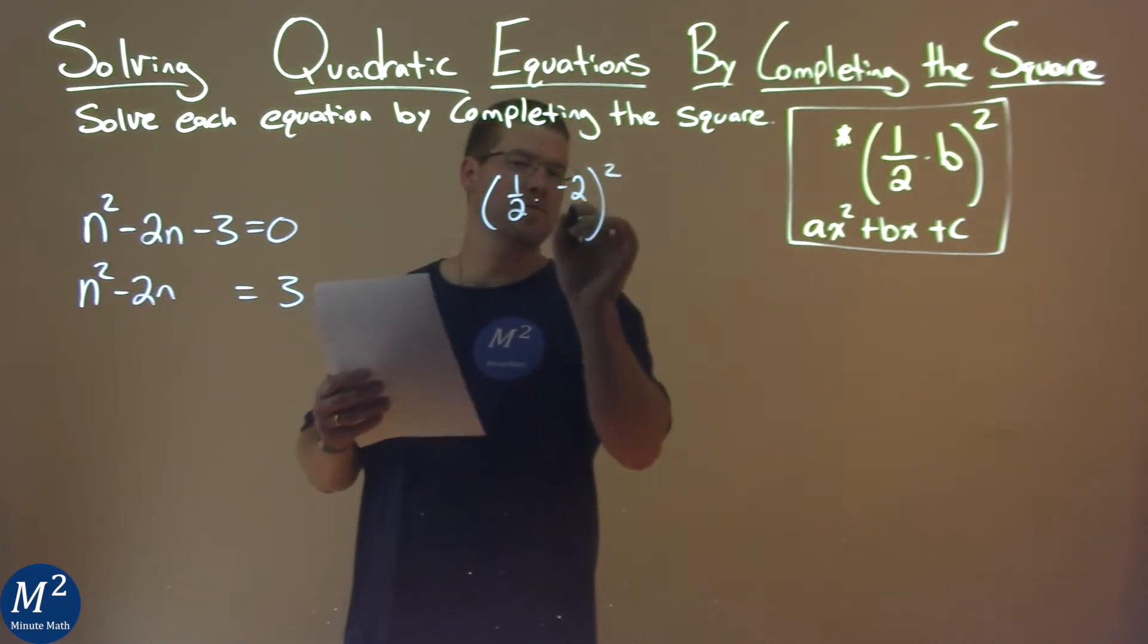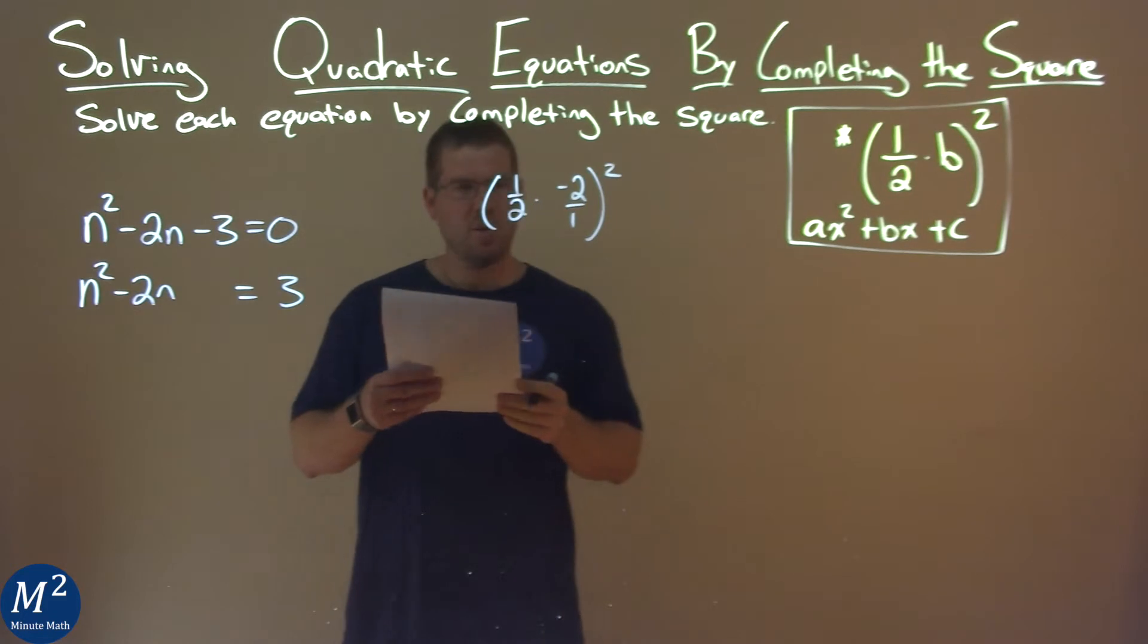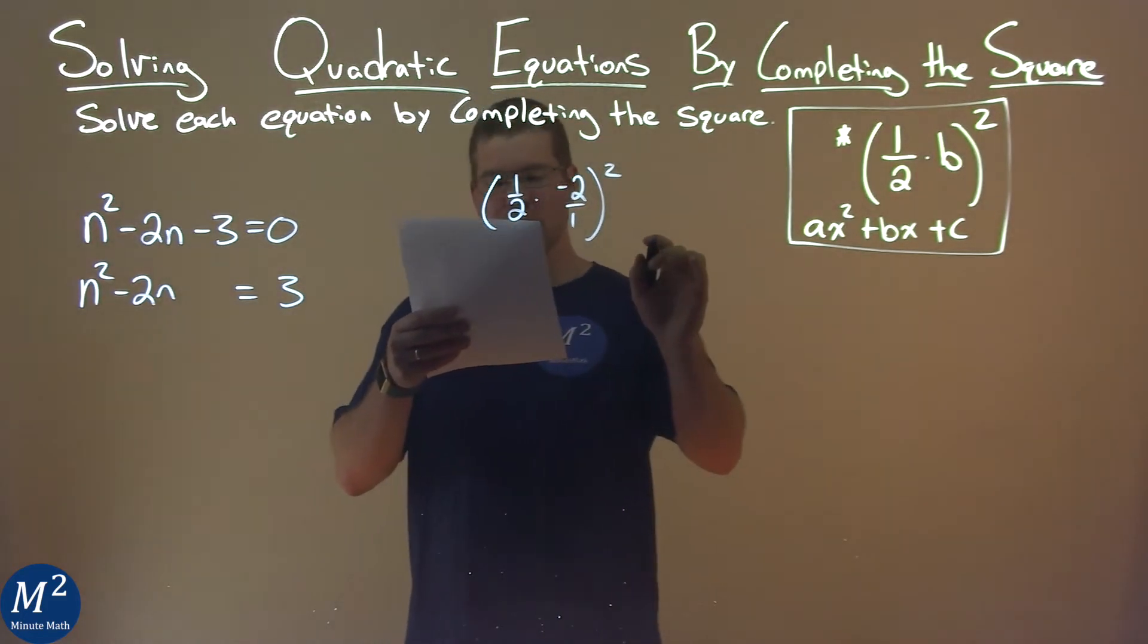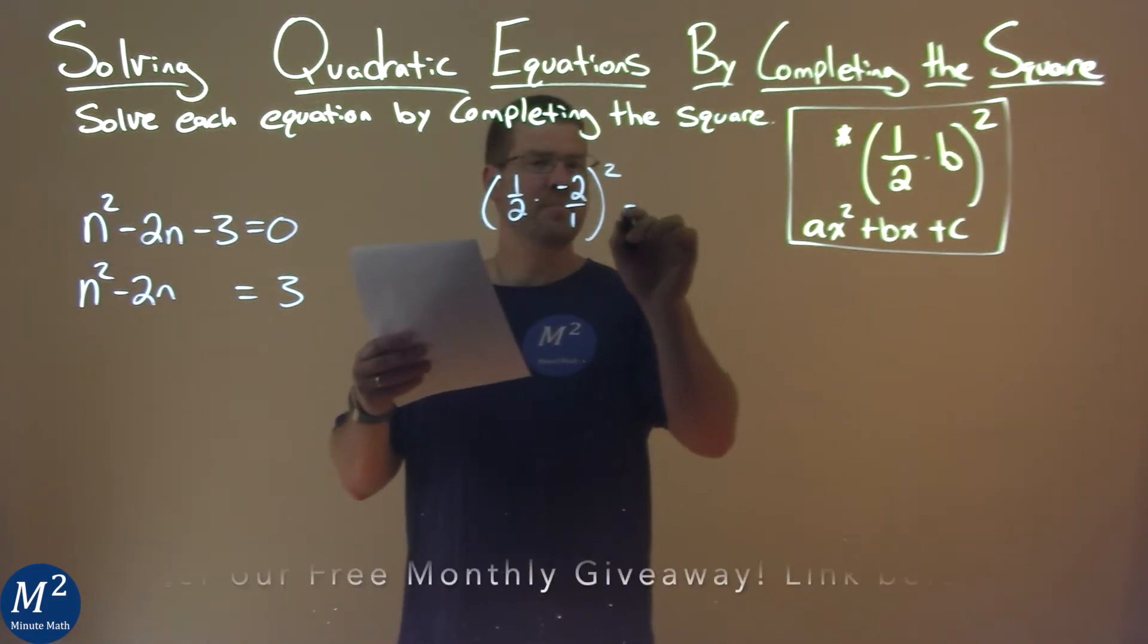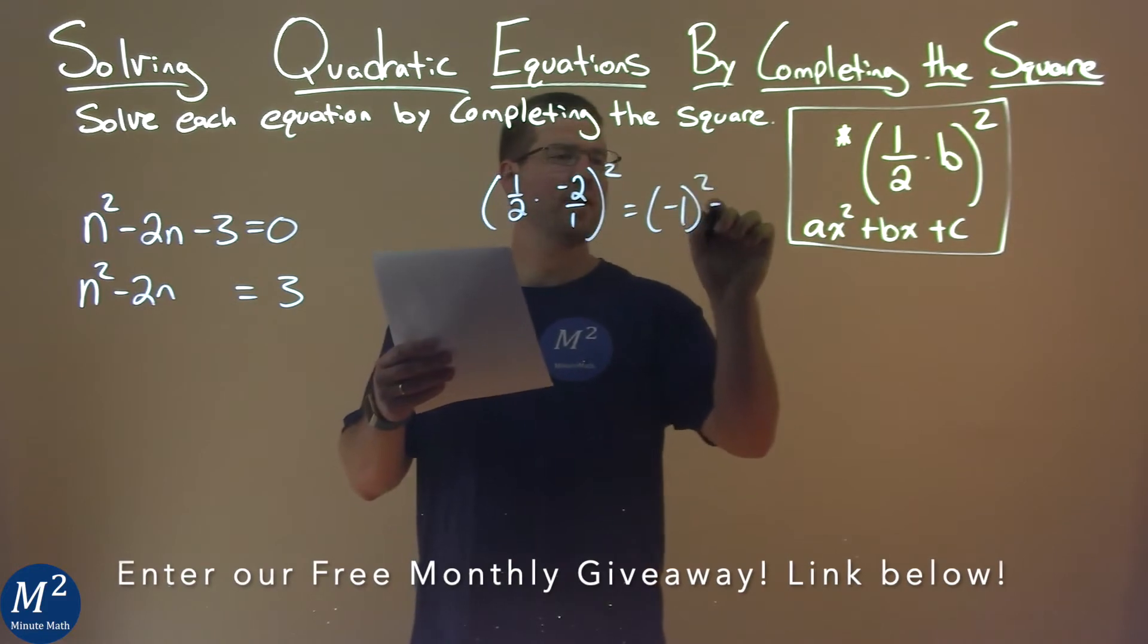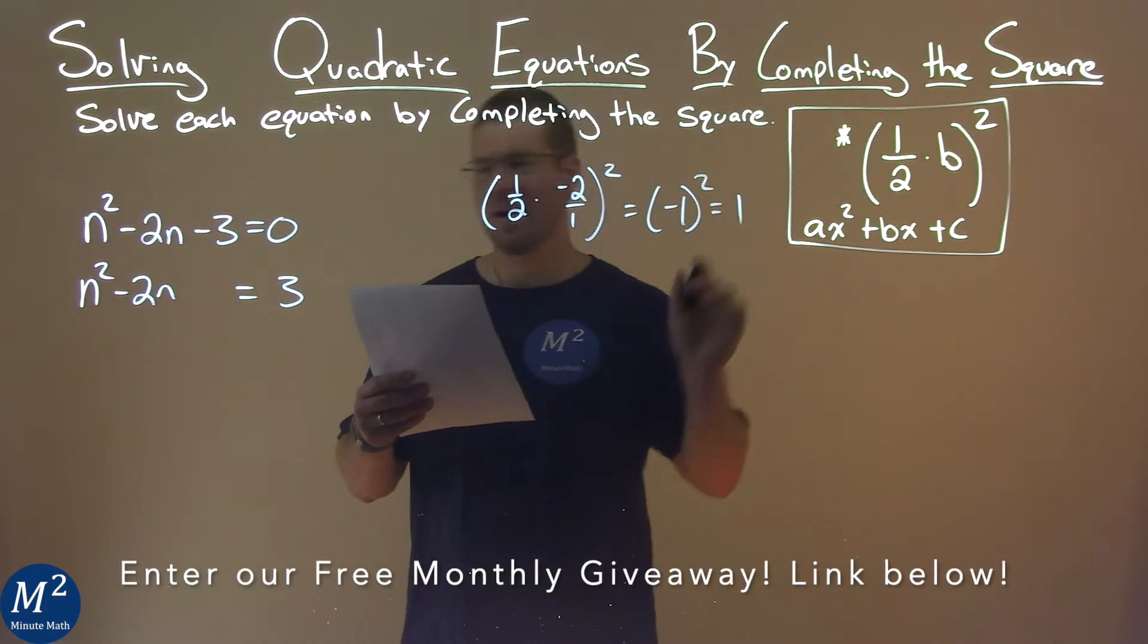Negative 2 is 2/1, which might make it easier to see. 1/2 times -2 is -1. So we have -1 squared, and (-1)² is positive 1.